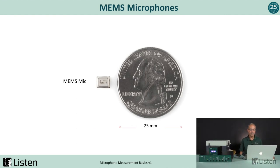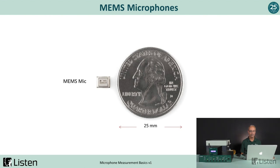Now let's talk about MEMS microphones. These are miniature microphones. What I'm showing here on screen is a US quarter-dollar coin with a diameter of about 25 millimeters, and next to it is a typical MEMS microphone, which is quite small in comparison — the MEMS mic is probably a package size of about 5 millimeters. There are a lot of advantages to MEMS mics because they can be put into very small spaces.